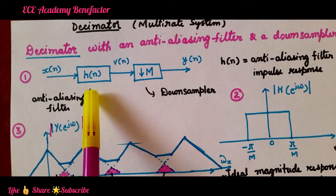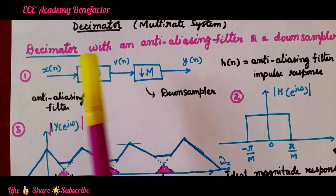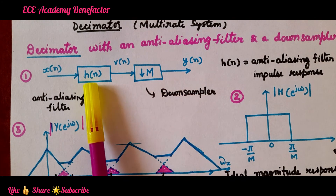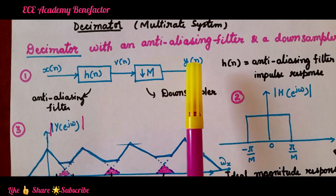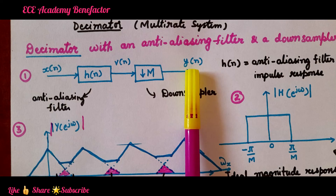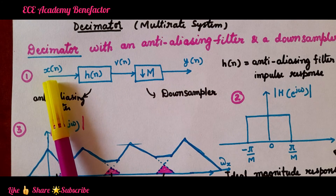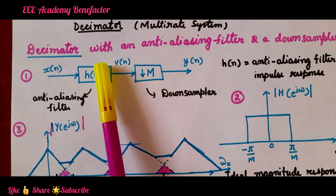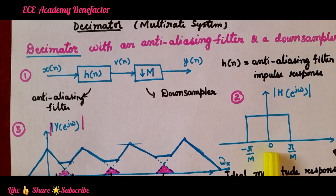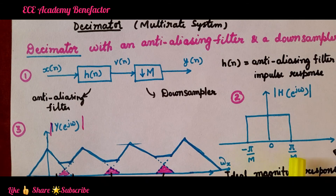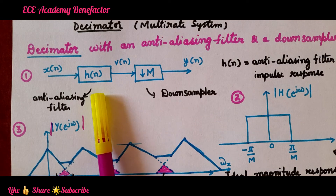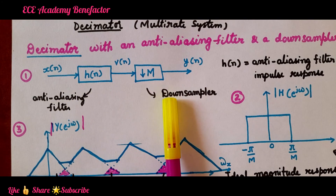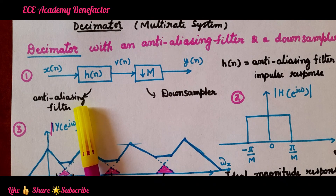So this diagram is for a decimator. The input signal, before down sampling by a factor capital M, is passed through an anti-aliasing filter to avoid the aliasing effect. Because if this filter is not present, the output frequency spectrum will have overlapping samples. If the signal x of n is band limited to plus or minus pi by M, the output will not be aliased or overlapped. So h of n is a low pass filter with magnitude response band limited from minus pi by M to pi by M. The decimator comprises an anti-aliasing filter and a down sampler, where the anti-aliasing filter avoids the aliasing effect when x of n is not band limited to plus or minus pi by M.